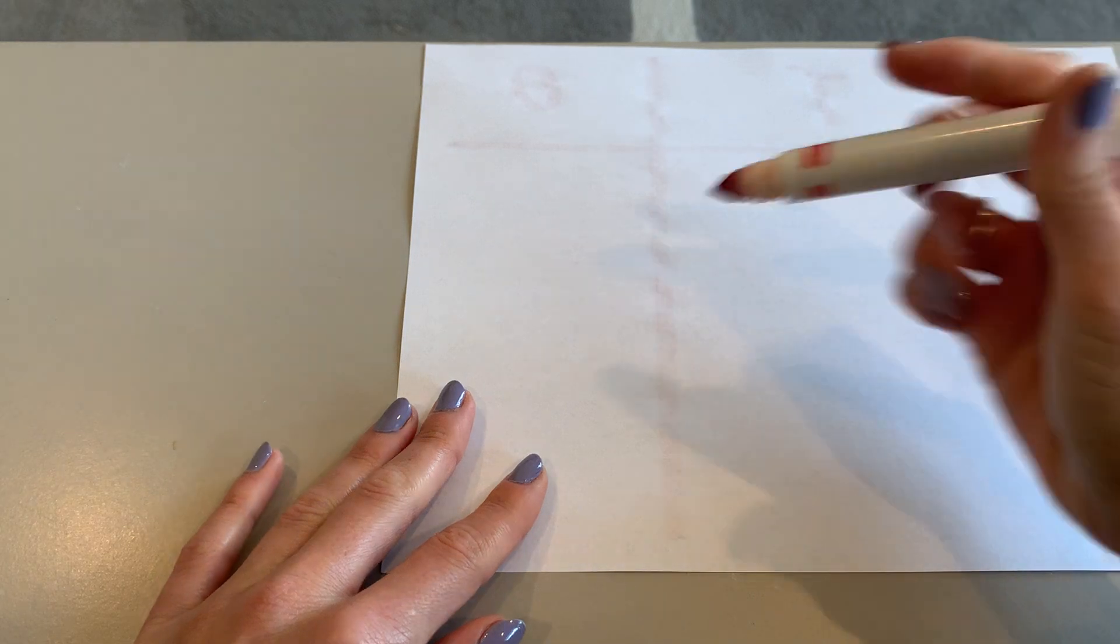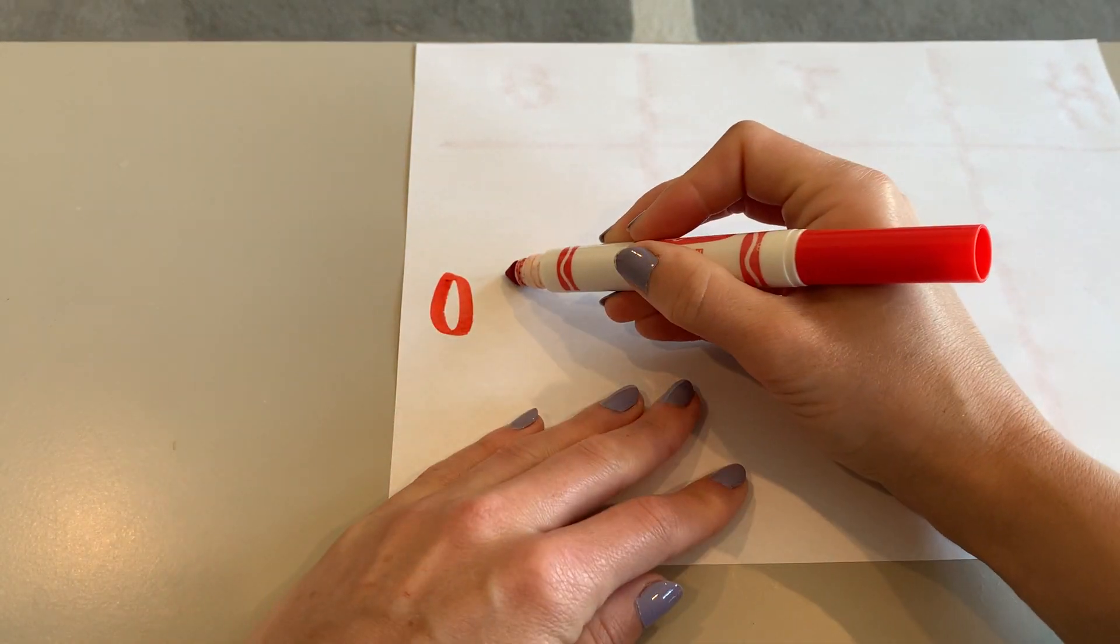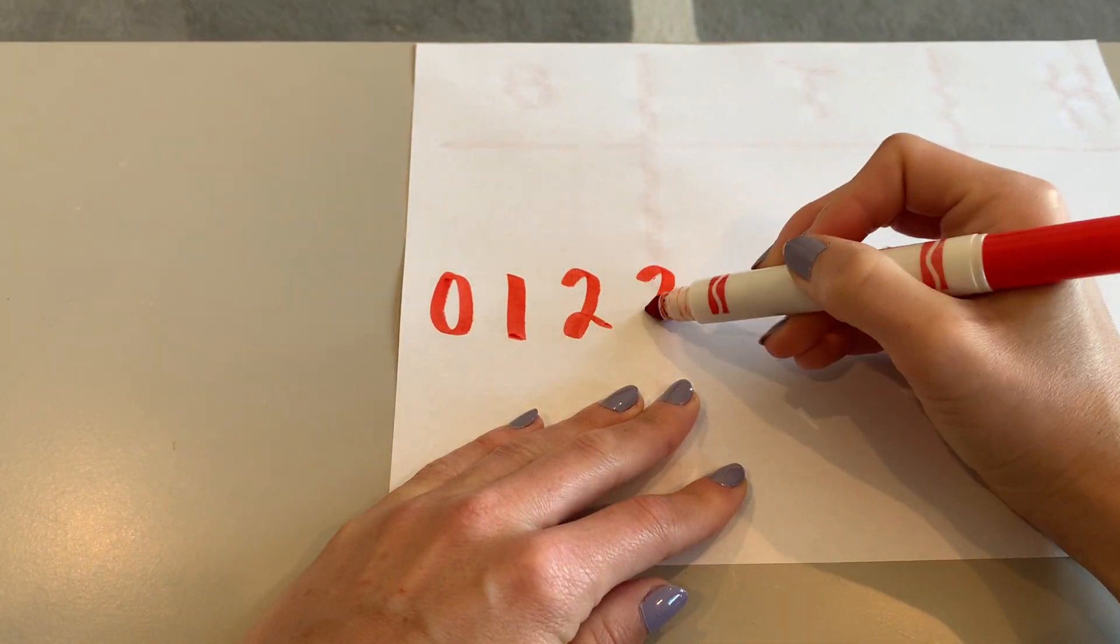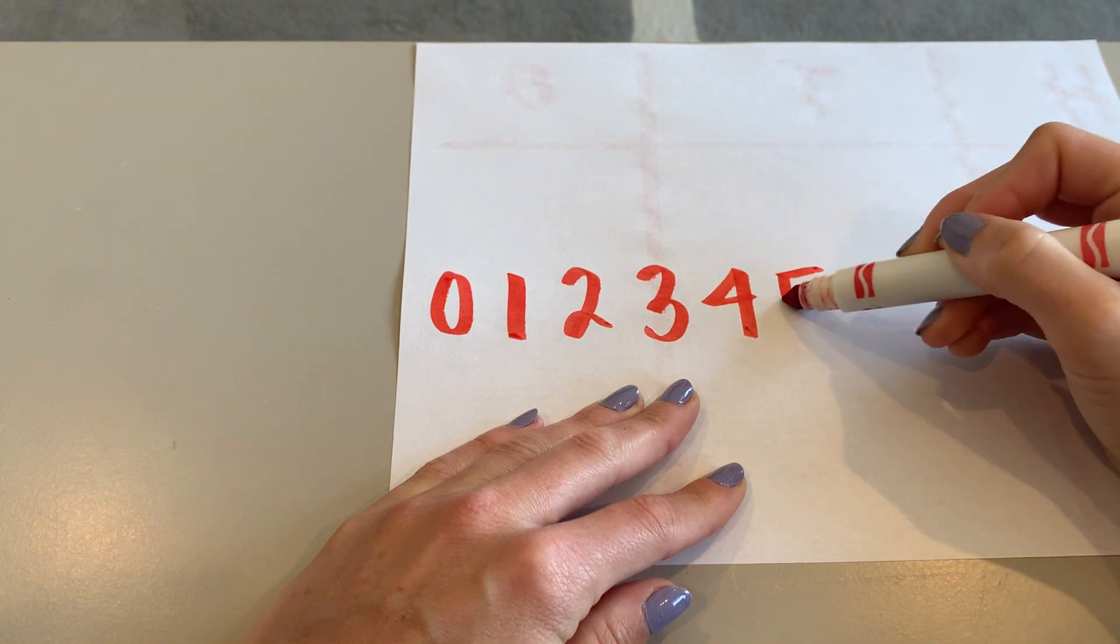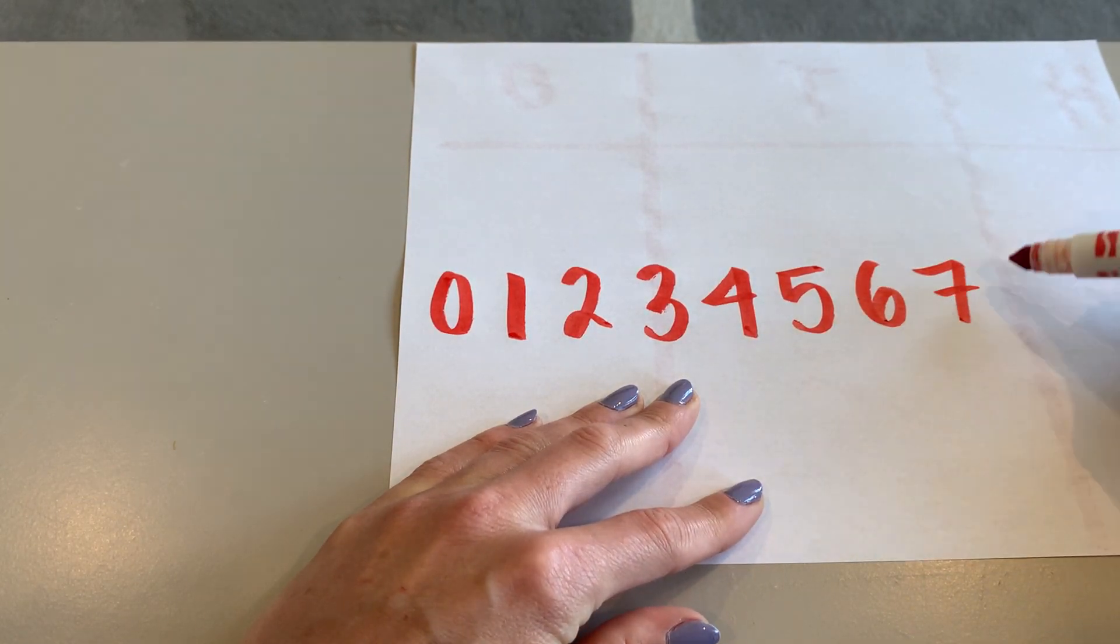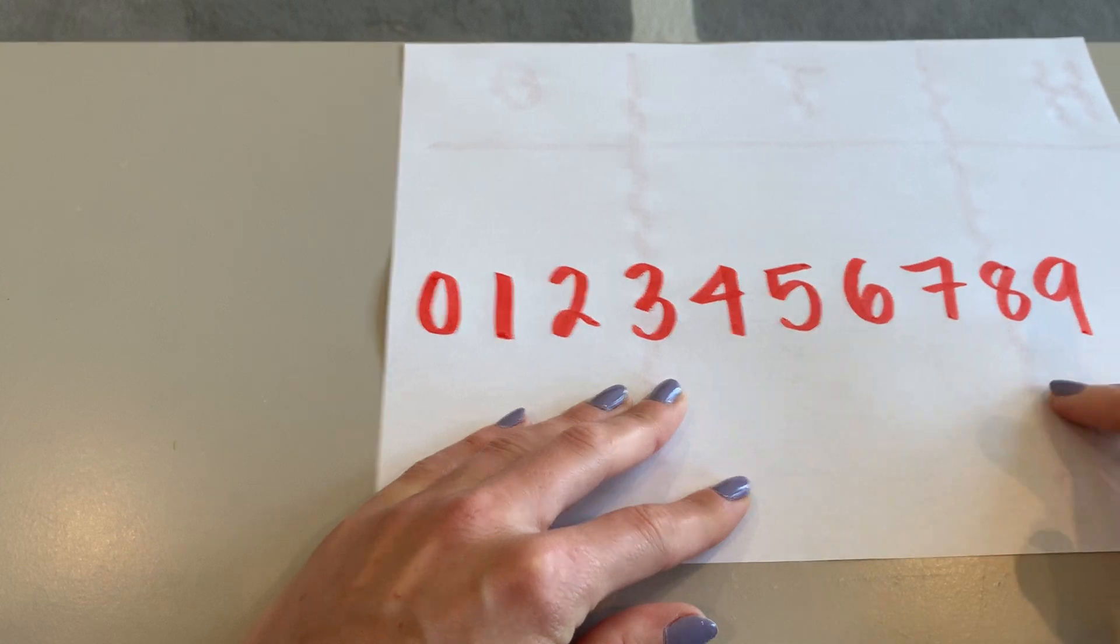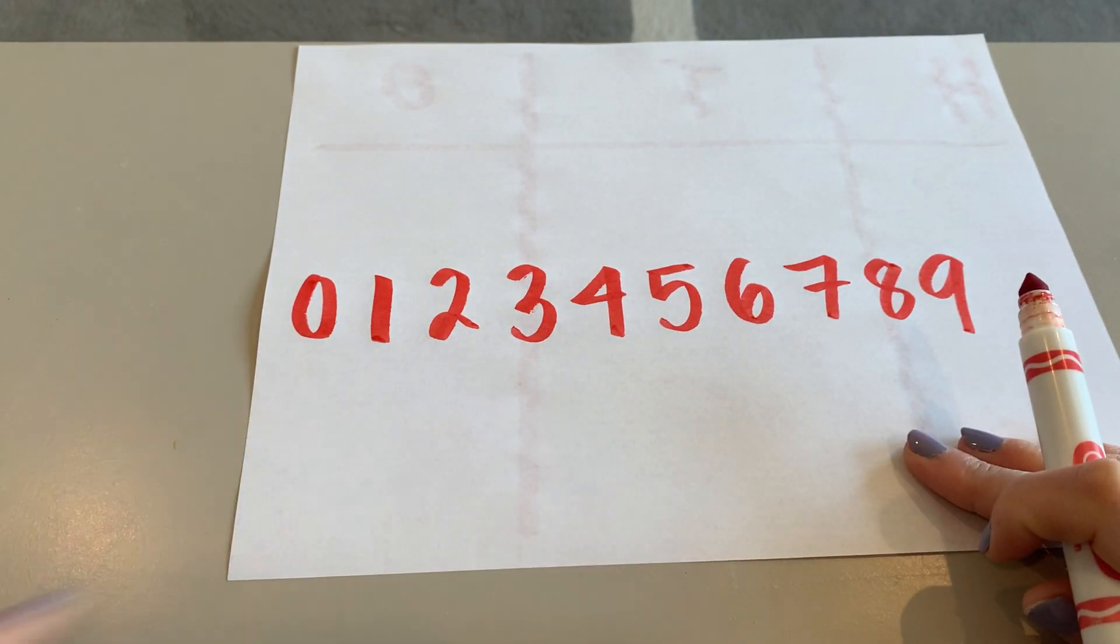I'm actually going to turn this page over because we're going to write 0, 1, 2, 3, 4, 5, 6, 7, 8, and 9 together. We're going to use these numbers for our HTO.